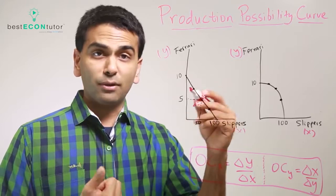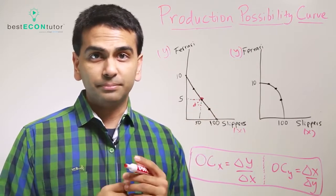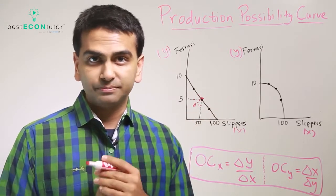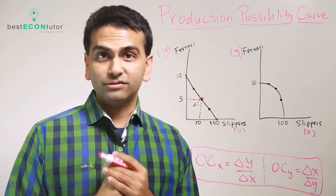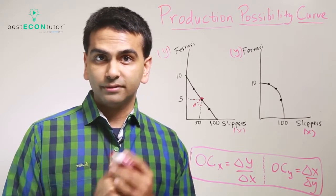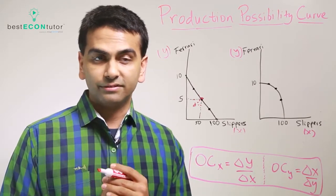Anywhere outside the PPF is simply impossible to produce. Looking at this, how can we relate what we just talked about, opportunity costs, with production possibilities curves?